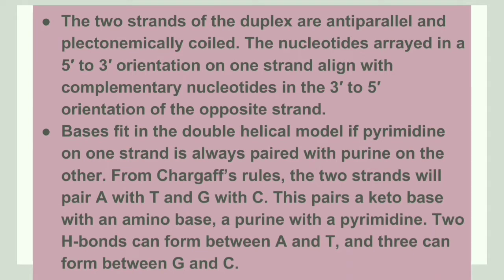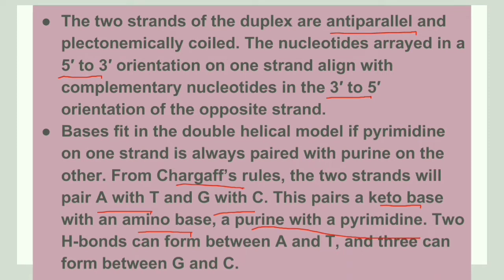According to the Watson and Crick model, the two strands are anti-parallel: one strand runs from 5' to 3' whereas the other strand runs from 3' to 5'. A purine always pairs with a pyrimidine. According to Chargaff's rule, A always pairs with T and G always pairs with C. Between A and T there are two hydrogen bonds, and between G and C there are three hydrogen bonds.